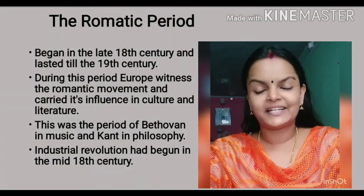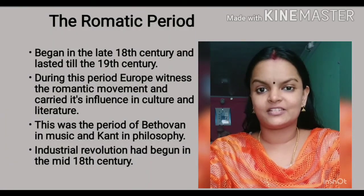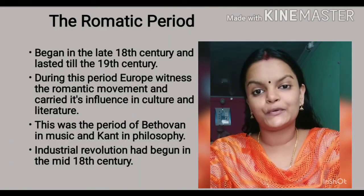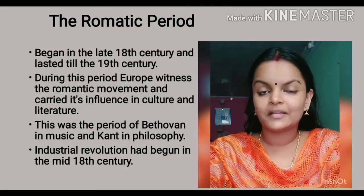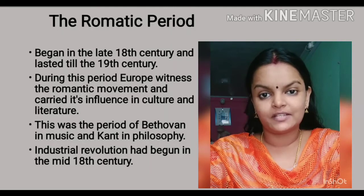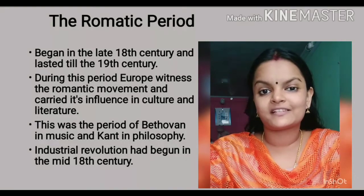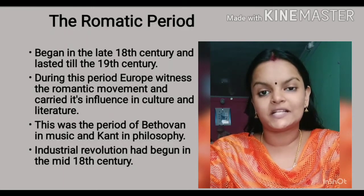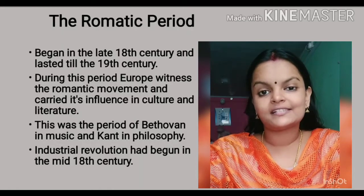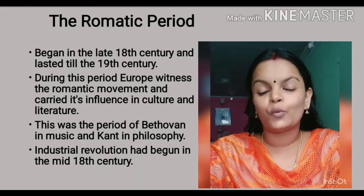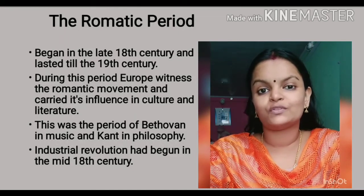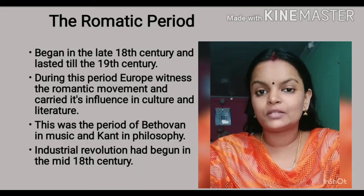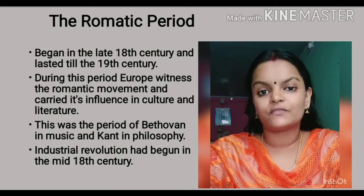The Romantic movement began in the mid 18th century and lasted till the 19th century. It was a cultural revolution, and naturally its influence had shadowed on literature also. During this time a series of literary output came forward. The writers of Europe started thinking on the basis of emotions, imaginations and feelings. Nature and its premises were given much importance, and writers started using the common man's language for their literary output.